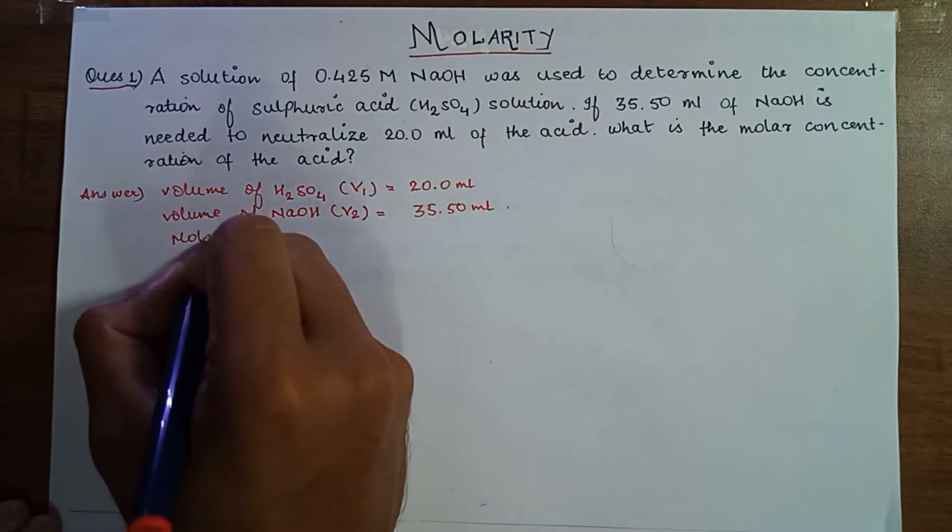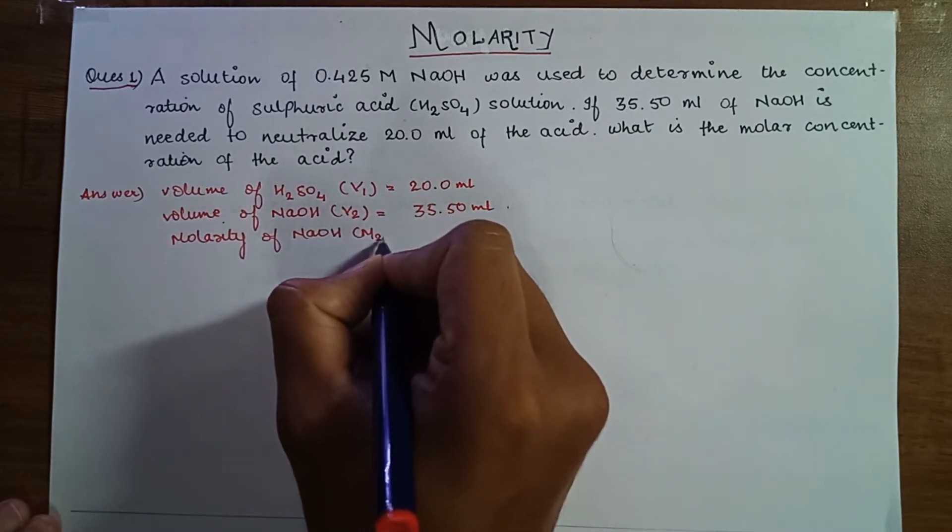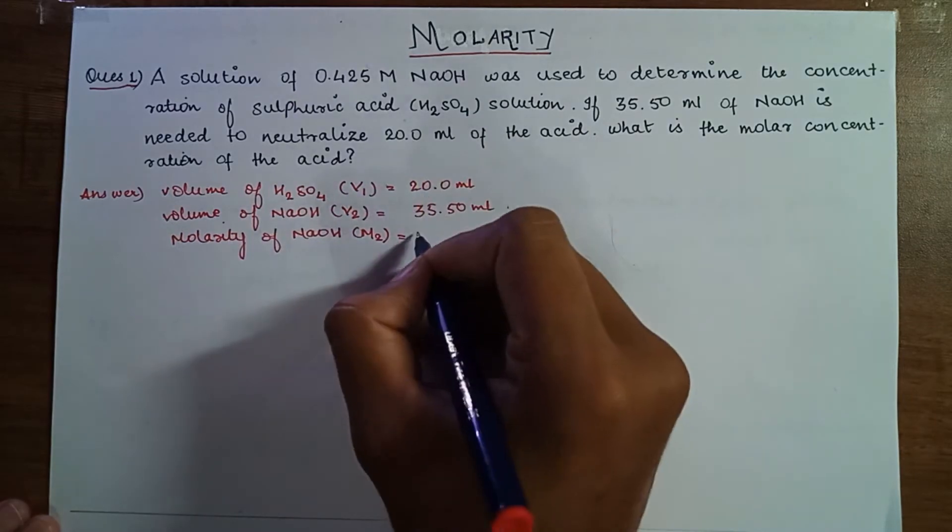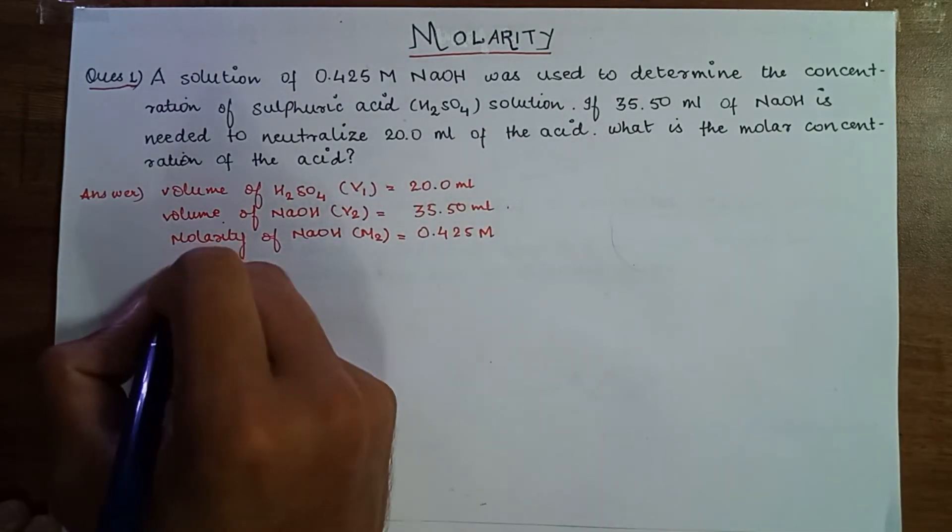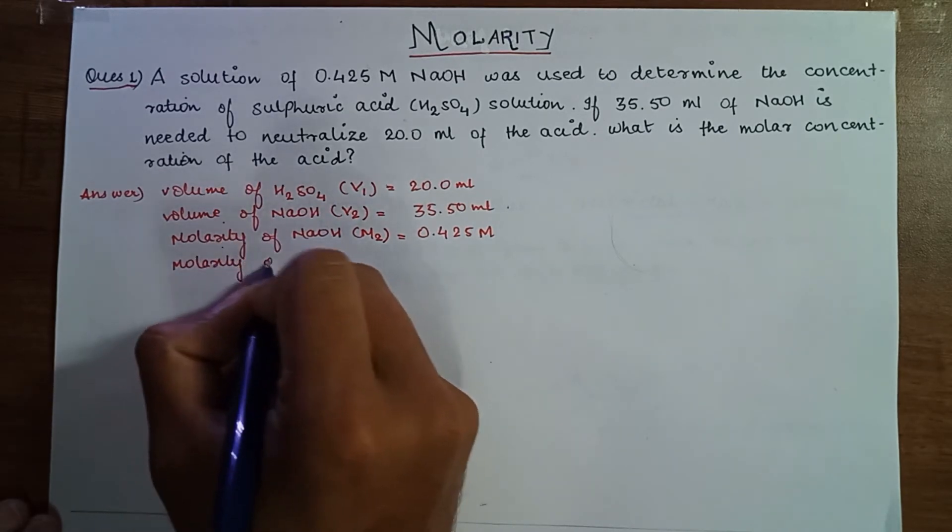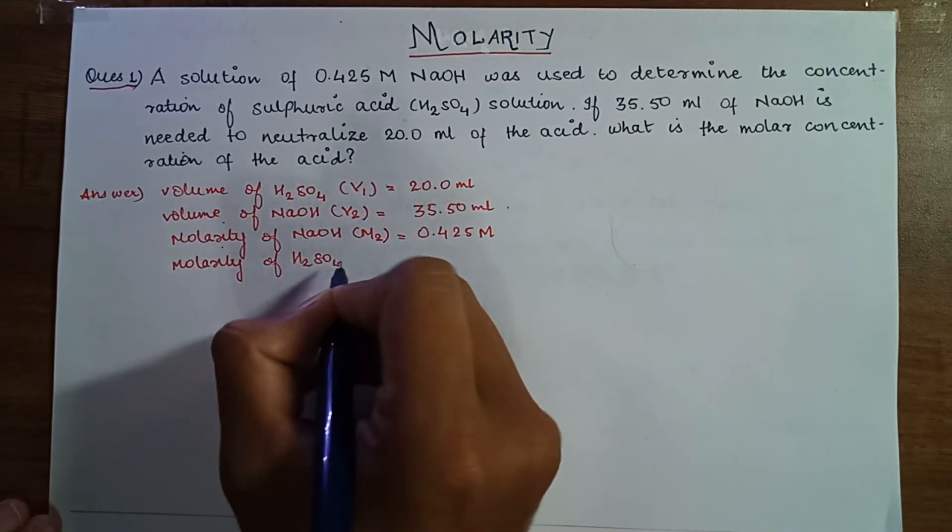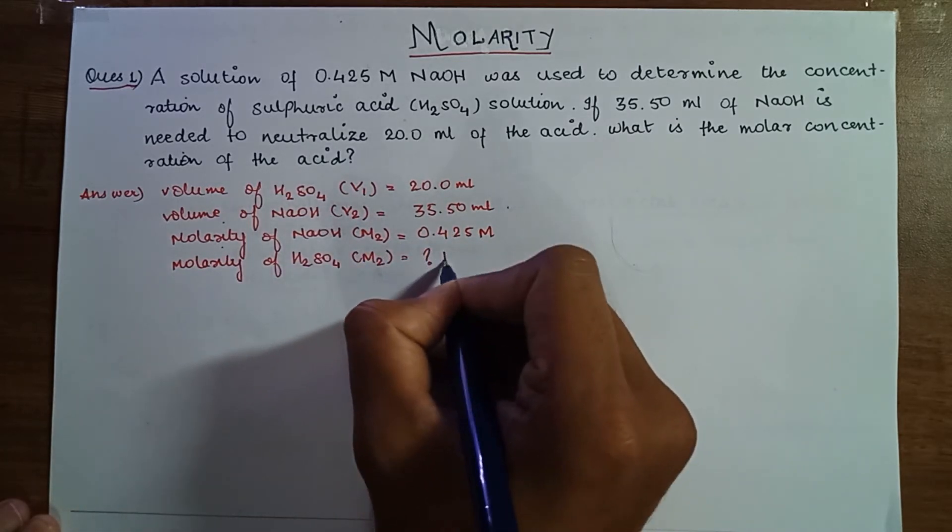We have to find the molarity of NaOH, M2, which is given as 0.425 molar. Molarity of H2SO4, you have to find. That is M1, you have to find molar.